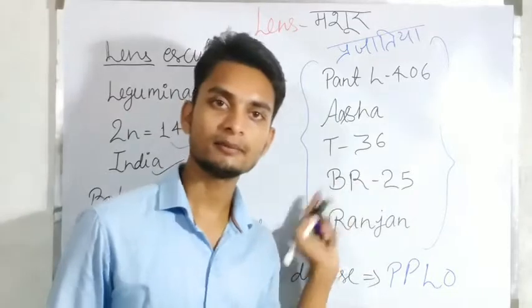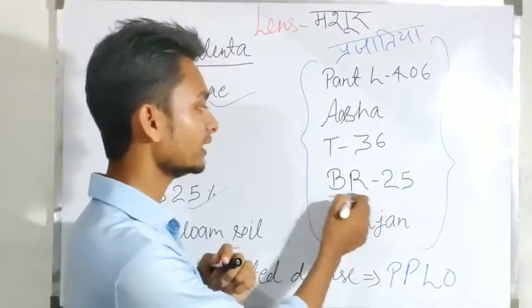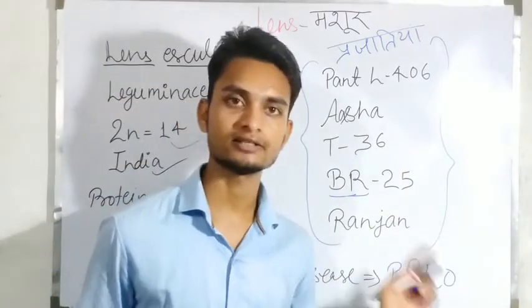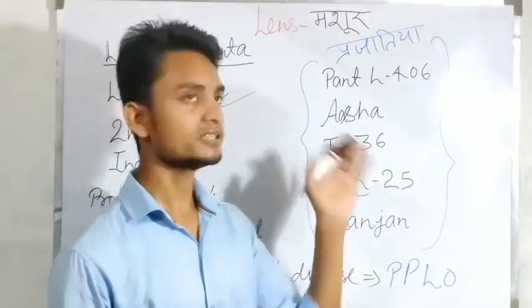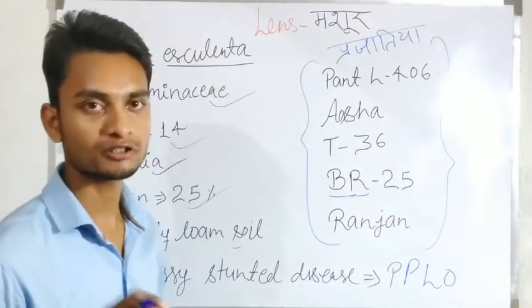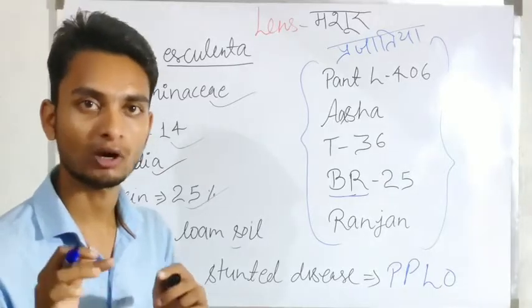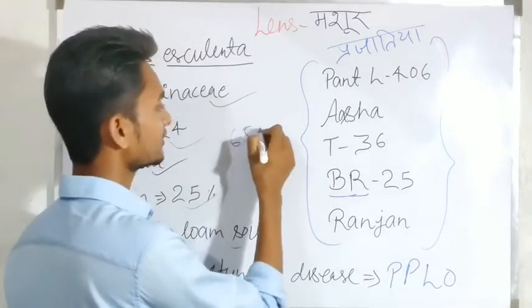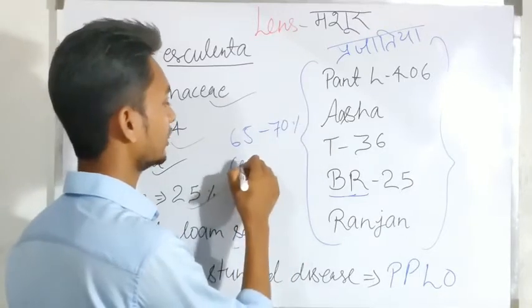In leguminous crops, the carbohydrate content is approximately 65 to 70 percent.